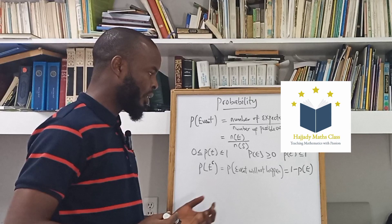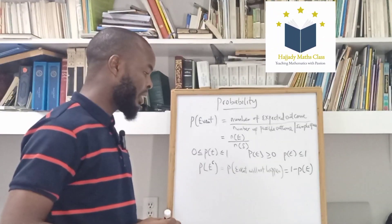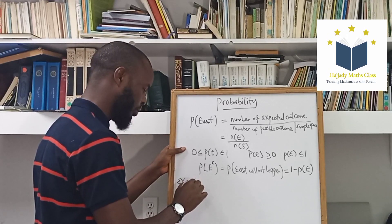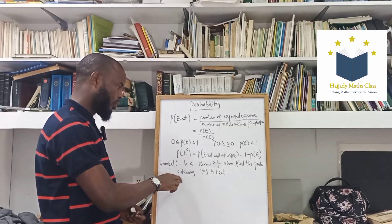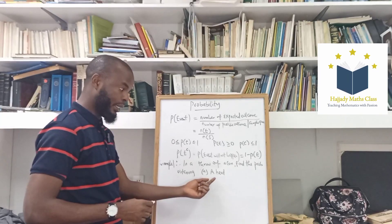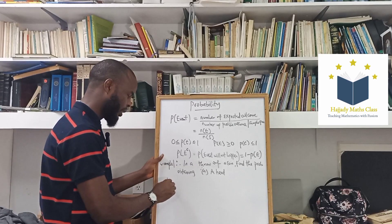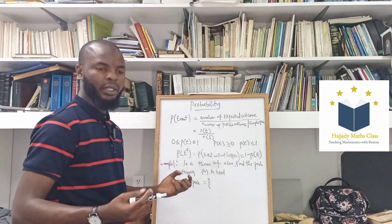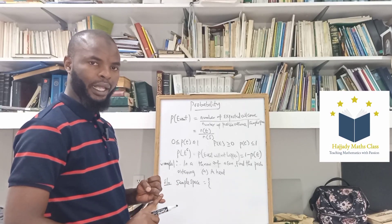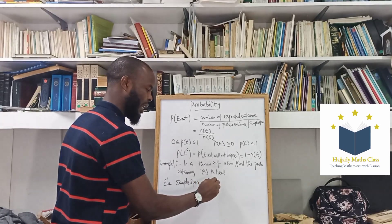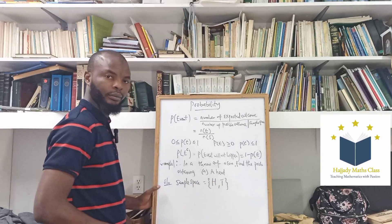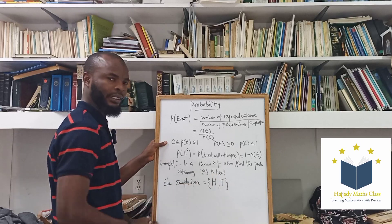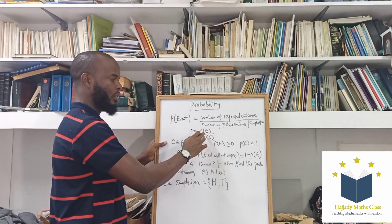I'm going to give you an example to illustrate what I've been saying. This is just a simple example; in subsequent episodes I'll move to more complex examples. Example one: in a single throw of a coin, find the probability of obtaining heads. The first thing we need to do is get the sample space. When you throw a coin, the possible outcomes you can have are: you can either have heads or you can have tails. These are the two possible outcomes.